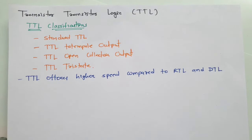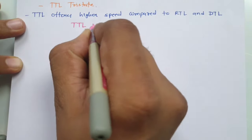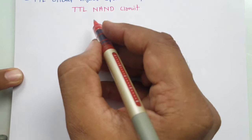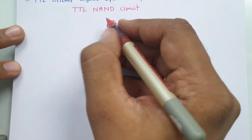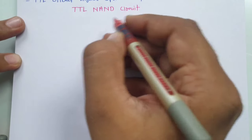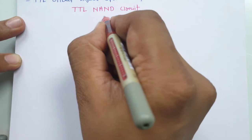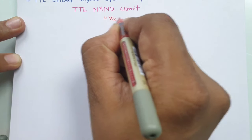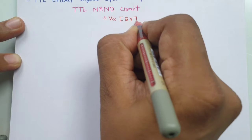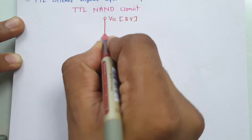In this video, I will be explaining the TTL NAND gate circuit. Here I will explain the standard TTL NAND gate circuit. In that, we have a VCC power supply — usually a 5-volt VCC power supply with TTL.